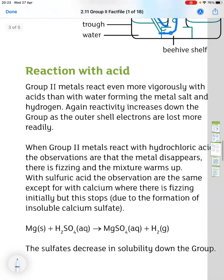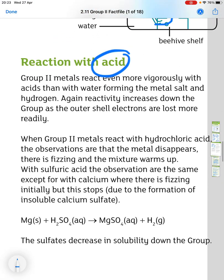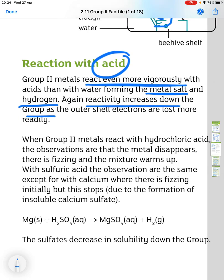Now, the reaction with acid. So, Group 2 metals react even more vigorously with acids than with water, forming the metal salt and hydrogen. So, again, reactivity increases down the group as the outer shell electrons are lost more readily.